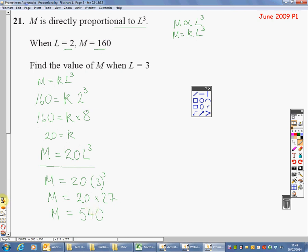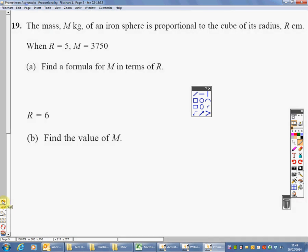Let's do one more. The mass M in kilograms of an iron sphere is proportional to the cube. But they haven't given you the L cubed thing this time, but it's just proportional to the cube of its radius R.